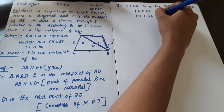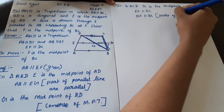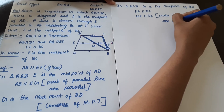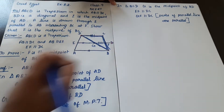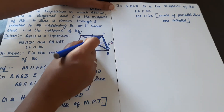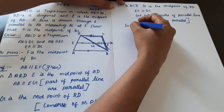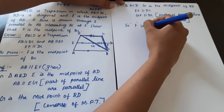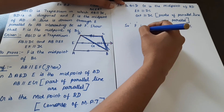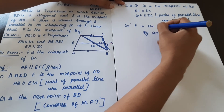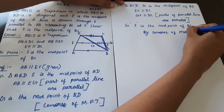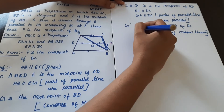By the converse of the midpoint theorem, since GF is parallel to DC and G is the midpoint of BD, F is the midpoint of BC. Hence proved.